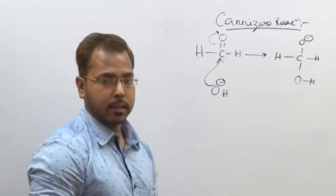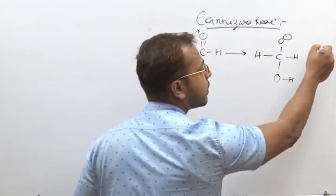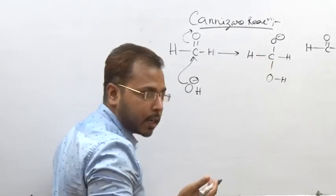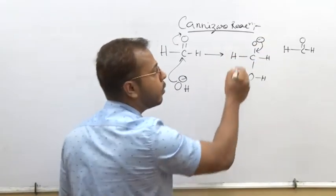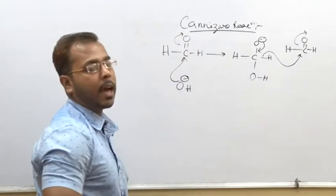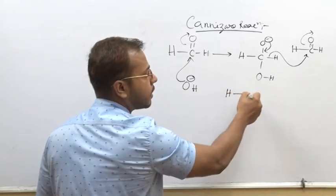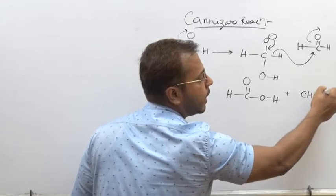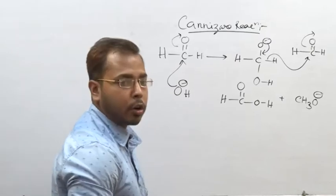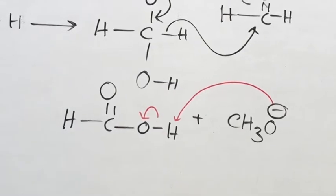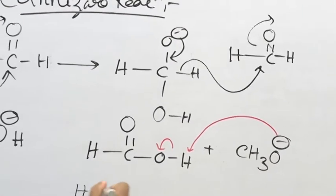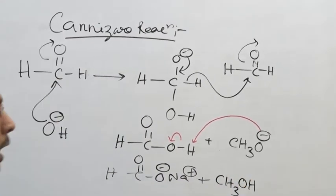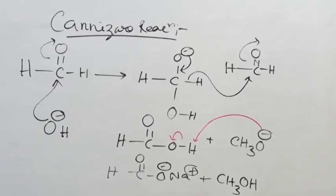The oxygen atom becomes negatively charged. In the second step, there is another formaldehyde molecule. The C=O bond strength is very high, so when OH⁻ attacks back on this carbon, a hydride shift occurs. The products are formic acid (HC=O–OH) and CH₃O⁻. The negative charge moves to oxygen, which takes H⁺ to give methanol. With Na⁺ from NaOH, the products are sodium formate (HCOONa) and methanol.